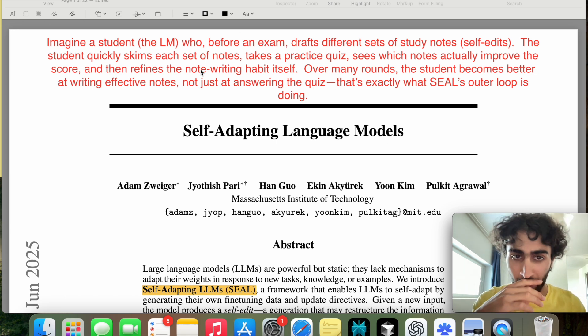And I would like to first start off by giving you ChatGPT's interpretation of this paper regarding meta-learning. So it says, imagine a student, the large language model, who before an exam drafts different sets of study notes, which in the paper are the self-edits. So it has a set of study notes, and then it skims each of the notes and takes a practice quiz.